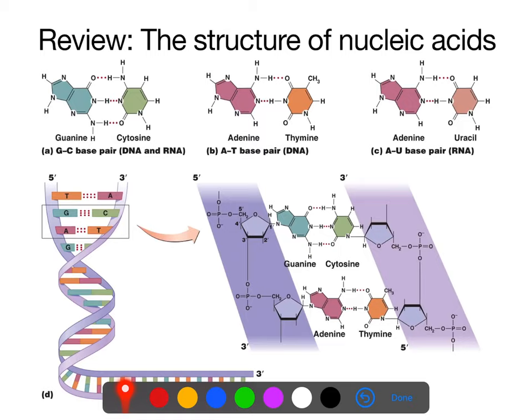Just a reminder — this is going to be the only review slide. There are four bases to DNA. Guanine, or G, pairs with cytosine, or C. Adenine, or A, pairs with thymine, or T, in DNA.